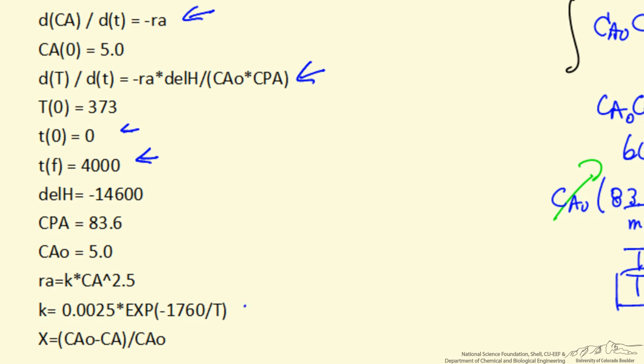The rate constant, important to remember, the temperature here is absolute temperature, so therefore our initial temperature, 100 degrees C, is 373 K, and then we calculate conversion from the concentrations.